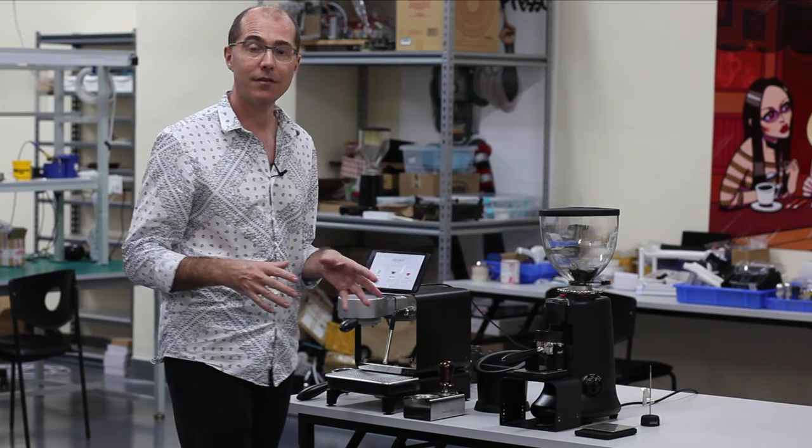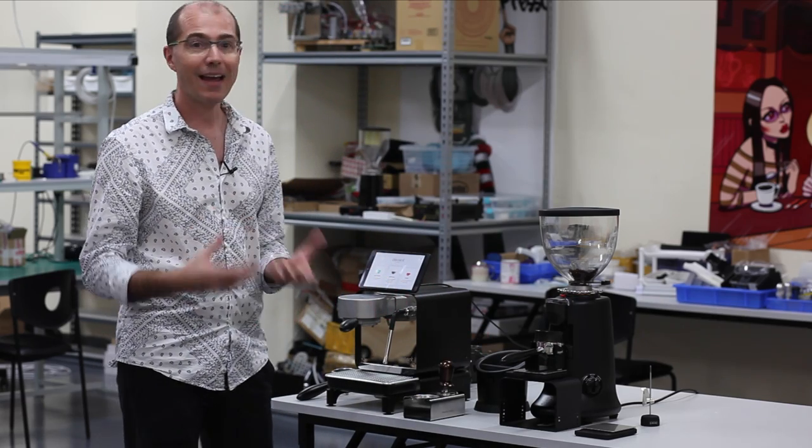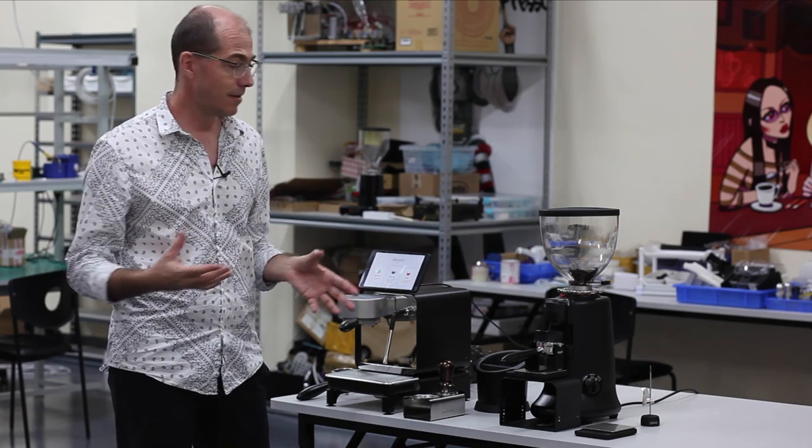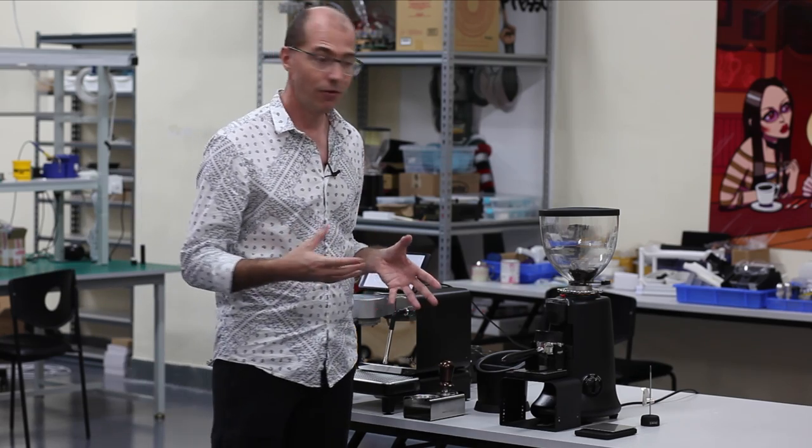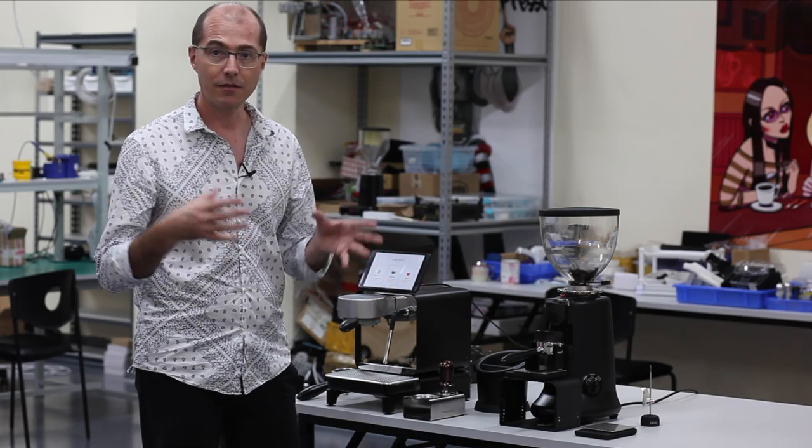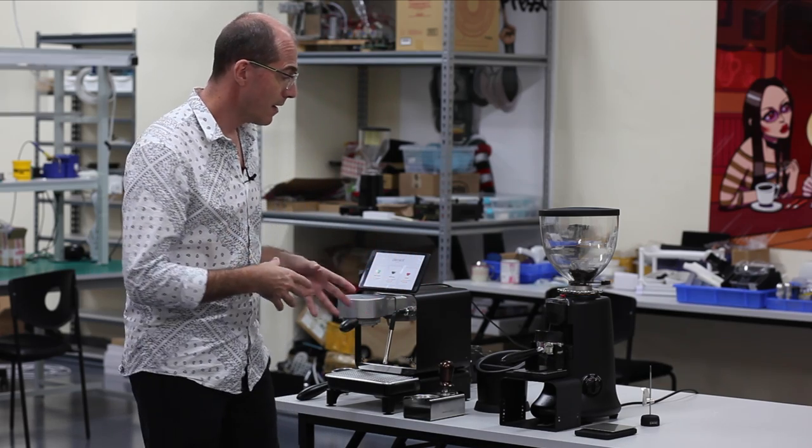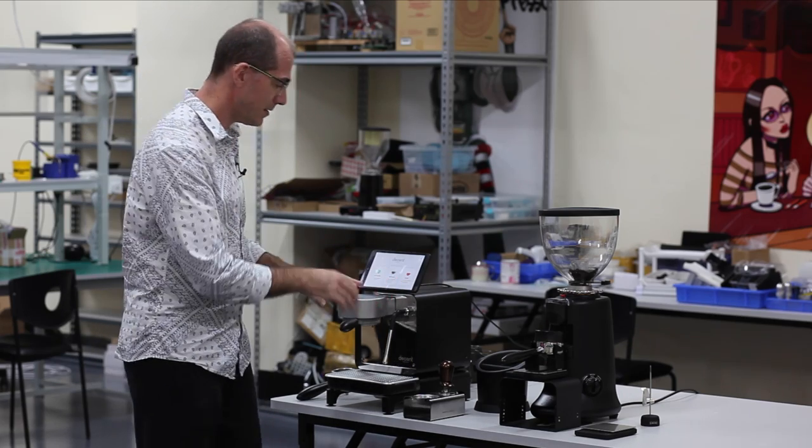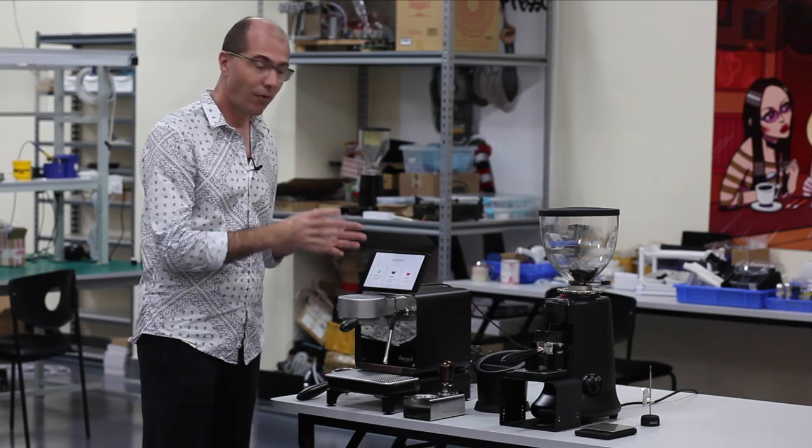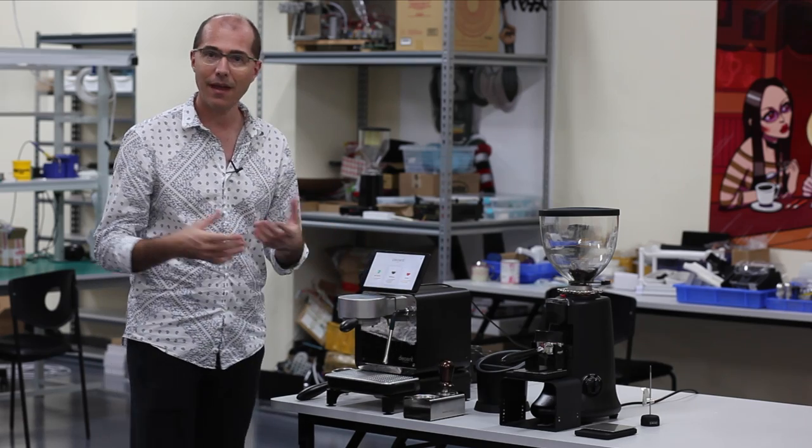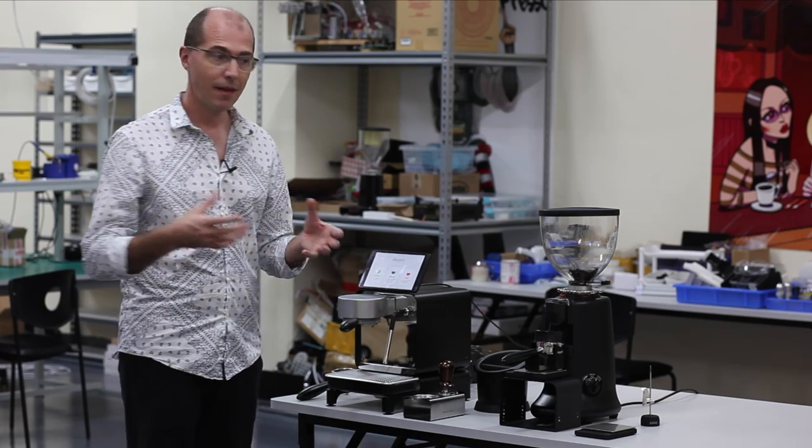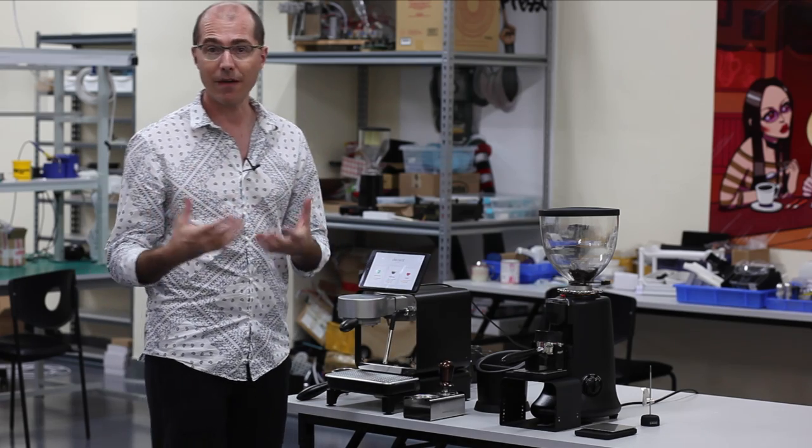Now virtually every grinder now available uses a timer to stop the dose. The problem with that is time isn't actually useful. What you want to know is that you put the dose weight that you intended to. In my case I'm doing 16 grams of coffee dose. It's going in this espresso machine and I'm putting twice as much water into a cup. I'm making a 32 gram espresso with 16 grams of coffee and that sort of recipe is very common.